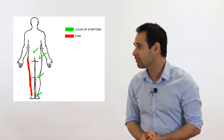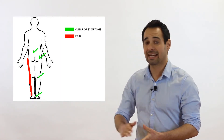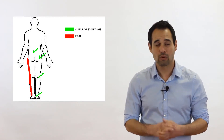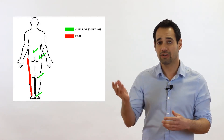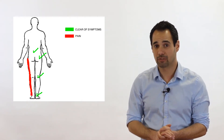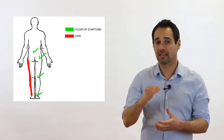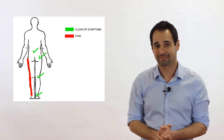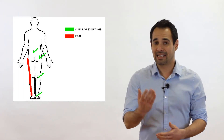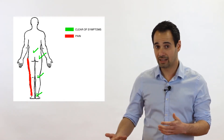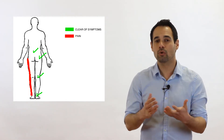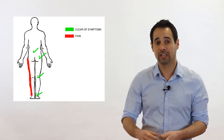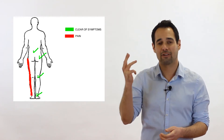Our second patient has pain starting around the greater trochanter spreading all the way down to the ankle. For joints above and below, the joint above the hip would be the lumbar spine — and since the hip, knee, and ankle are already involved in the main clinical assessment, we clear the lumbar spine with range of movement testing with overpressure. Because pain spreads from the hip down to the ankle, we also need to assess the closest spinal structure — the lumbar spine — and complete a neurological examination of the lower limb, including dermatomal testing, myotomal testing, lower limb tension tests, and reflex tests.